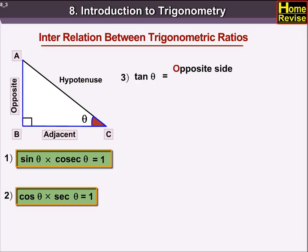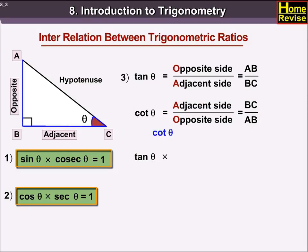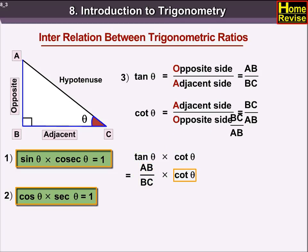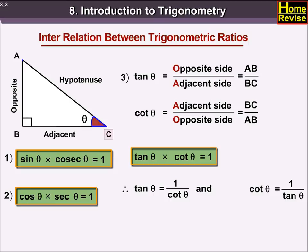Tan theta is equal to opposite side upon adjacent side, that equals AB upon BC. Cot theta is equal to adjacent side upon opposite side, that equals BC upon AB. Now, tan theta into cot theta is equal to AB upon BC into BC upon AB, which is equal to 1. Therefore, tan theta into cot theta is equal to 1. So, tan theta is equal to 1 upon cot theta, and cot theta is equal to 1 upon tan theta.